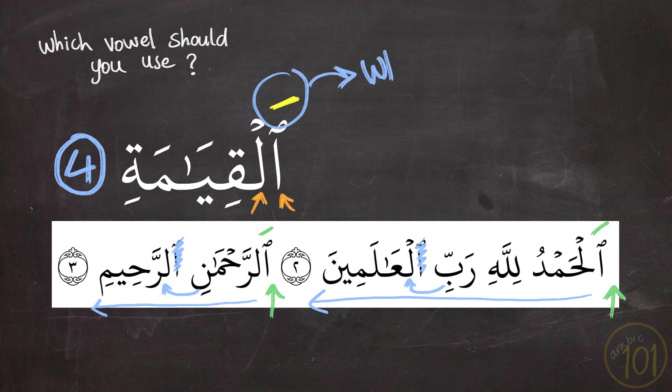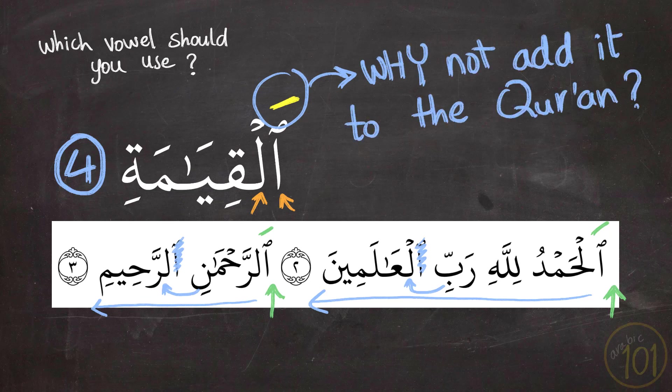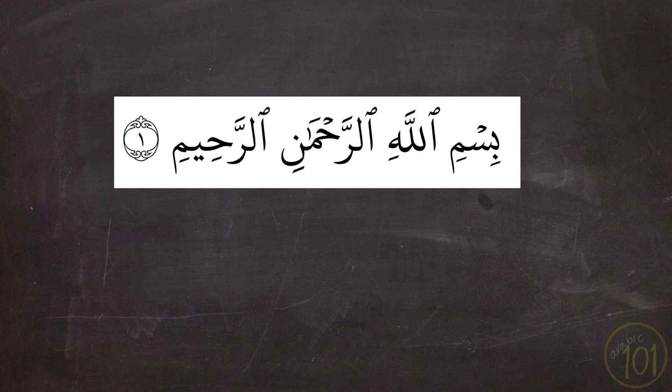You might wonder why we can't just add tashkeel or a short vowel on top of Hamzat Wasl to solve the problem before it is even created. The reason is that if a letter has tashkeel on it, it gives the indication that it must be pronounced at all times. On the other hand, Hamzat Wasl is meant to be dropped — and it is dropped much more often than it is pronounced. In fact, it is dropped so often that sometimes it completely disappears in some words.